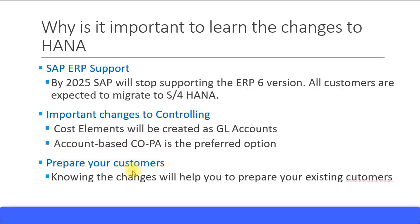The third important reason is to prepare your customers, because by 2025 they have to migrate to S4HANA. Knowing what changes you need to make in your ERP 6 version to ease migration will help you prepare your customers. For example, if your client is using costing-based COPA, you can inform them that to migrate to S4HANA they need to activate account-based COPA. If you already start activating account-based COPA, it will be easier to build reports and get users accustomed to it, so at the time of migration you do not have to do any additional work.